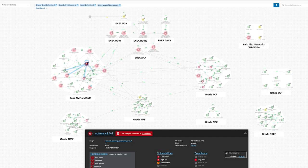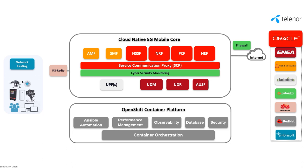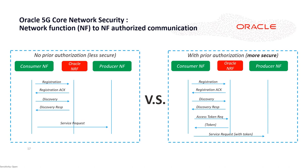This is the Prisma Cloud Compute Console. We have full visibility over deployed CNFs. Let's pick one of the containers — we can see a summary of compliance violations, identified vulnerabilities, and suspicious runtime events. In order to secure the communication between network functions, we have implemented access token functionality from Oracle, and we have leveraged TLS to ensure encrypted network function to network function communication.